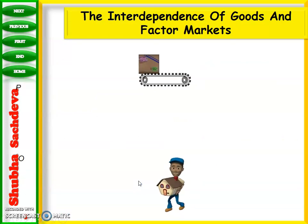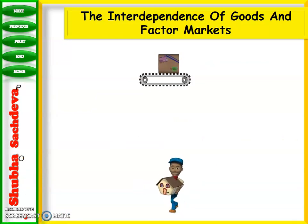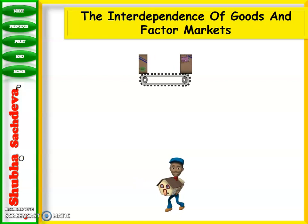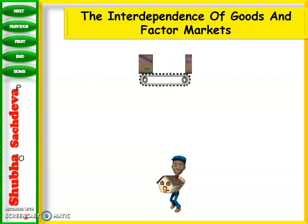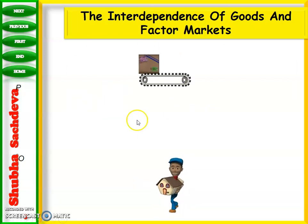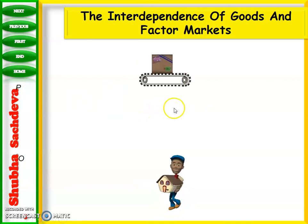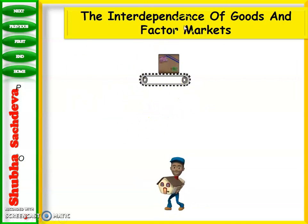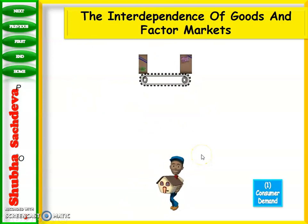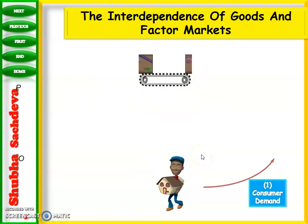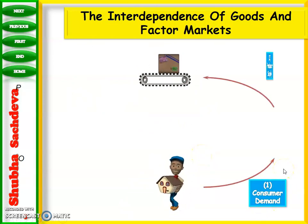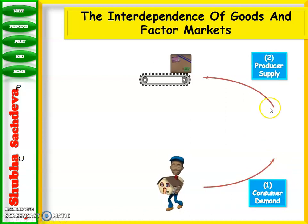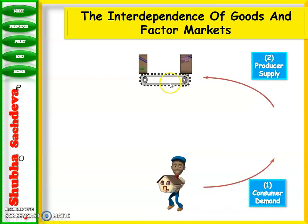Now let's understand the interdependence of the goods and factor markets. Factor markets refer to the market for factors of production. Here we have a producer and a household. The consumer demands goods, and the producer supplies them.